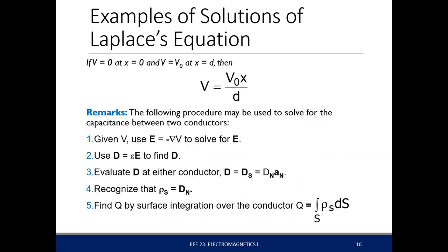If we set the origin at x equal to 0 to be ground, V equals 0, and at some distance d the voltage is V0, then the voltage function becomes V0 x over d. Since you already have the voltage, you can get the capacitance using Laplace's equation. You have the potential field for this region, so you can get the electric field using the negative gradient. You can then use this equation to find the flux density and examine the boundaries between dielectric and conductor by applying boundary conditions.